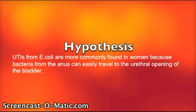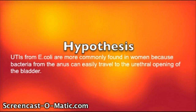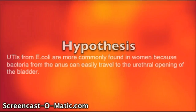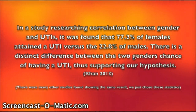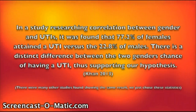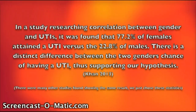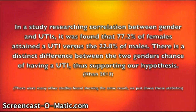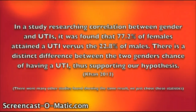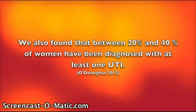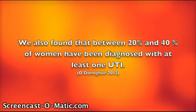Hypothesis! We hypothesize that UTIs from E. coli are more commonly found in women because bacteria from the anus can easily travel to the urethral opening of the bladder. In a study researching correlation between gender and UTIs, it was found that 77.2% of females attained a UTI versus 22.8% of males. There is a distinct difference between the two genders' chance of having a UTI, thus supporting our hypothesis. We also found that between 20% and 40% of women have been diagnosed with at least one UTI, showing this is a common infection in women.